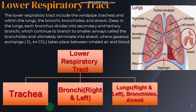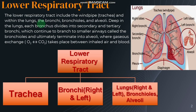The lower respiratory tract includes three major parts: trachea, bronchi — one for the right and one for the left lung — and of course the lungs, in which there are the bronchioles, which then terminate into the alveoli.